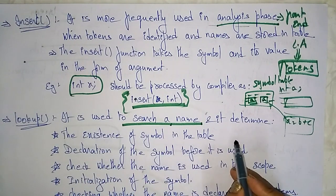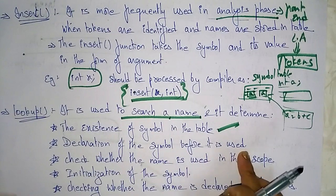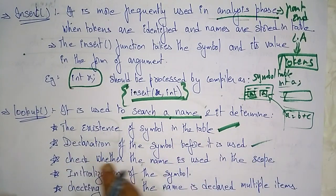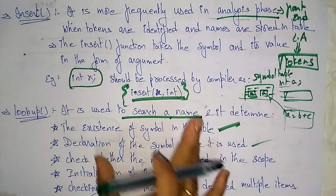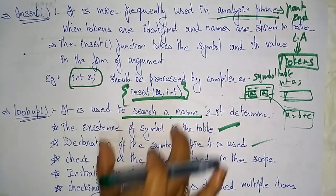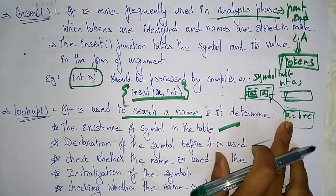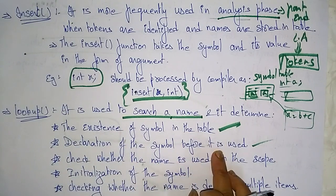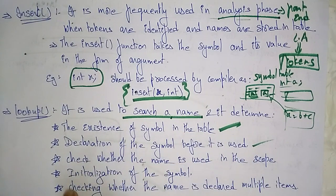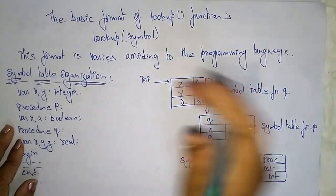The lookup operation checks the existence of the symbol in the table, the declaration of the symbol before it is used, whether the name is used in the scope or not, initialization of the symbol, and whether the name is declared multiple times or not. These are all the functions that the lookup operation performs.